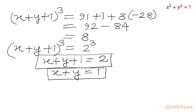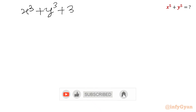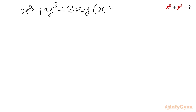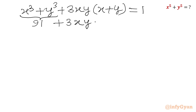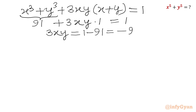Now I will cube both sides: (x + y)³ = 1³. Expanding the LHS: x³ + y³ + 3xy(x + y) = 1. Substituting x³ + y³ = 91 and x + y = 1: 91 + 3xy(1) = 1. Subtracting 91 from both sides gives 3xy = −90, so xy = −30.